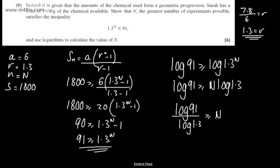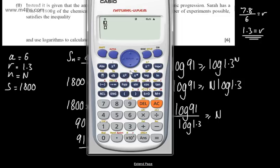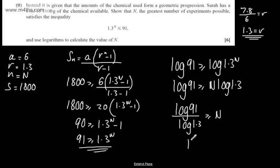So, let's have a look now at this on a calculator, and we can put this in. So, again, you can use any base that you want as long as you're consistent. Log 91 over log 1.3, and this is going to give us a value of 17.193. So, 17.193 dot, dot, dot must be greater than or equal to N.